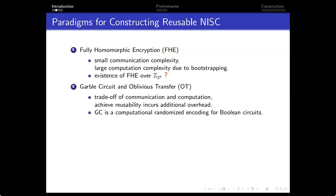The second approach is to use garbled circuits as oblivious transfer, where the sender acts as the garbler, sends the garbling of the circuit to the OT functionality, and the receiver, according to its input, sends the OT choices. Finally, the receiver can learn the function evaluation from the output. However, in this pipeline, achieving reusable security is much more expensive than achieving one-shot security.